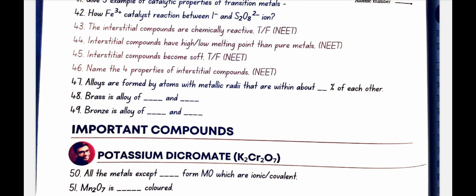Name four properties of interstitial compounds. Interstitial compounds have high melting points. They are very hard. Some borides approach diamond in hardness. Third is, they retain metallic conductivity. And fourth is, they are chemically inert.